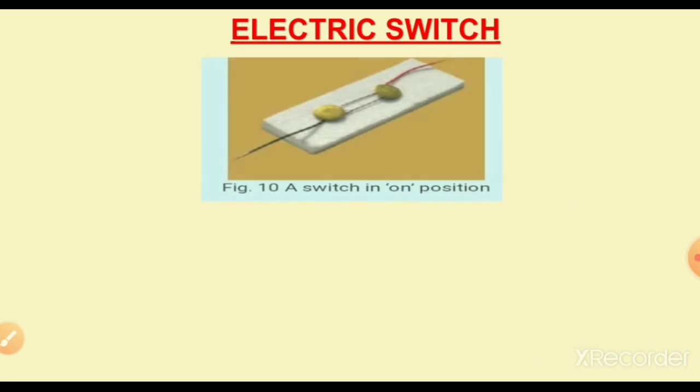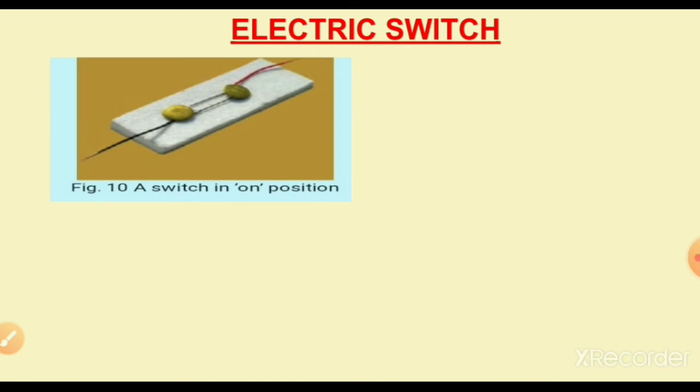Let us discuss about the electric switch. Do you know what an electric switch is? We use the electric switch to turn on or off a torch or any electrical appliance. An electric switch is a simple device that either breaks the circuit or completes it, to stop or start the flow of current.